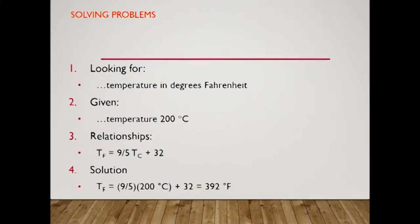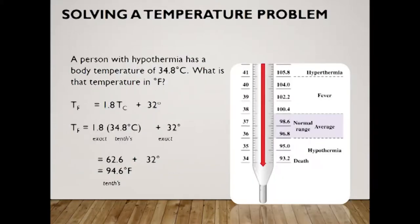You're looking for temperature in degrees Fahrenheit given temperature in Celsius. Based on the relationship you see, you can use that equation. The solution would be 9/5 times 200 plus 32, which equals roughly 400 degrees. You can set up your oven for 400 degrees and you're gonna have a wonderful cake.